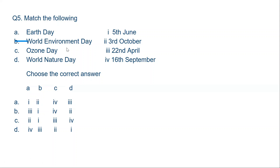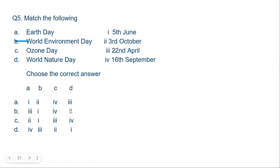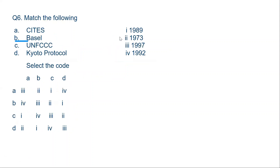You can also memorize from here that Ozone Day, C, matches with 4 — Ozone Day is celebrated on 16th September. World Nature Day is celebrated on 3rd October. Please memorize these dates.